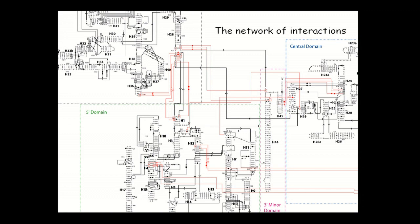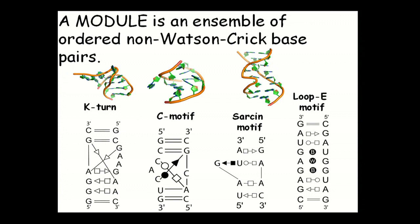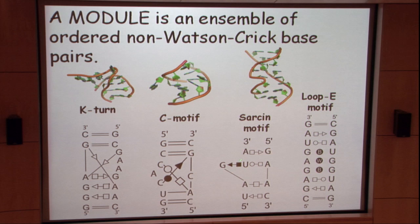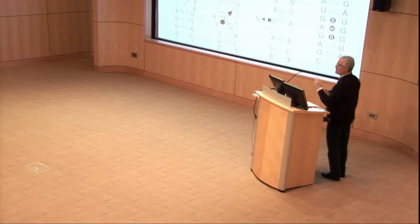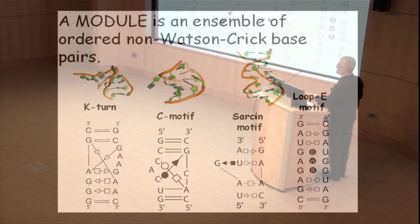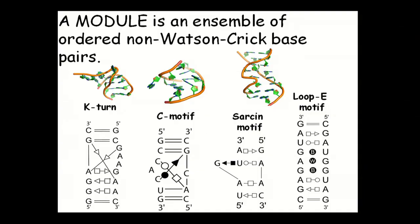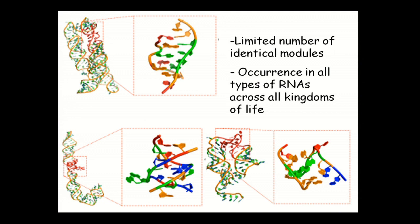A module is defined as an ensemble of ordered non-Watson-Crick base pairs — they are in a given order and you cannot flip or rearrange them; it is a unit. The number of such identical modules is limited, and they are absolutely key for forming 3D structure. If you find a sequence and can show there is one of those motifs, you know this molecule is really structured, binds to a protein, does something special, and is not a standard type of RNA. These modules occur in all types of RNA across all kingdoms of life.